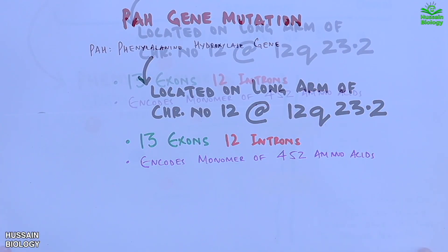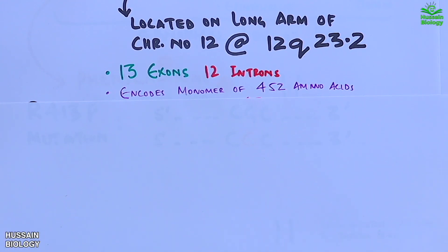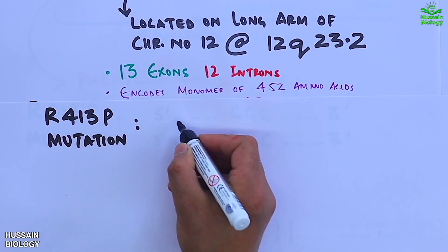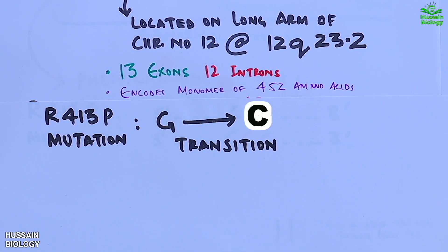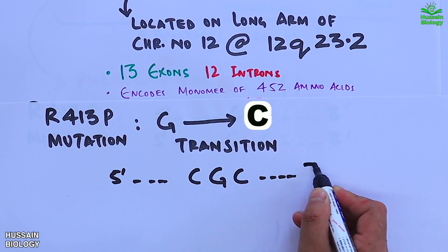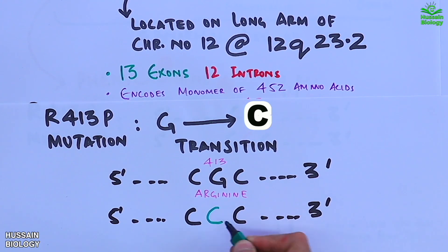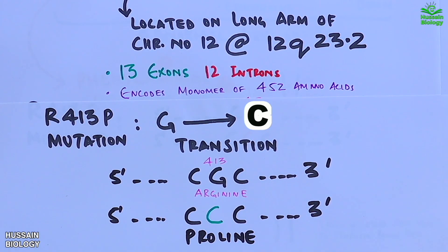The PAH gene has a diversity of mutations, one of which is the R413P mutation involving a G-to-C transition. In the normal sequence, we have CGC at position 413, running in the 5' to 3' direction, which codes for arginine. In the mutant, G is replaced by C giving CCC, which codes for proline — thereby changing the whole sequence and leading to the mutation.